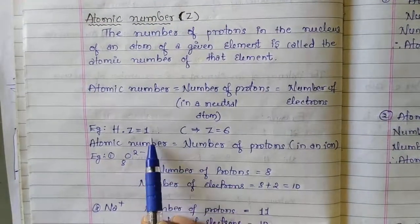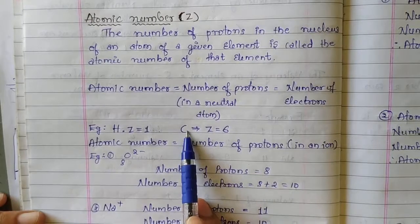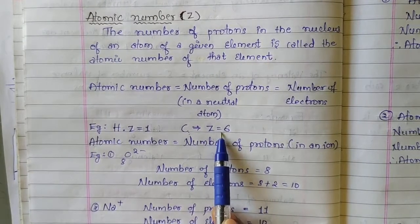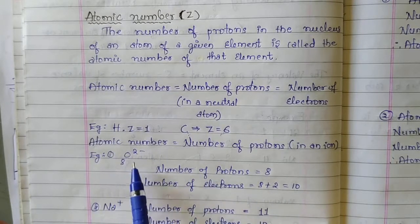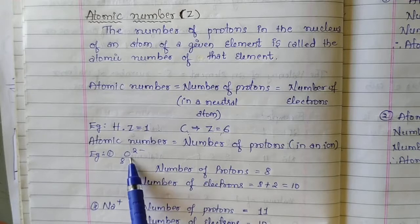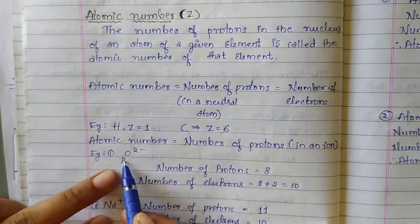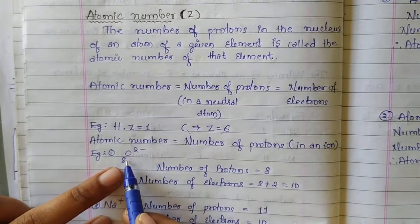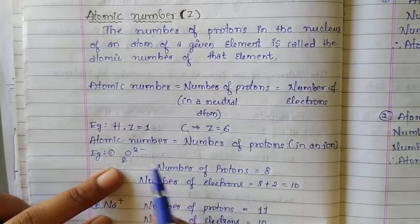For example, if you take hydrogen, its atomic number is 1 — it has 1 proton and 1 electron. If you take carbon, its atomic number is 6 — it has 6 protons and 6 electrons. And in case of O²⁻, it is an ion, not a neutral atom. The subscript indicates the atomic number of oxygen, which is 8. That means the number of protons present in this oxygen is 8.